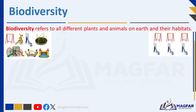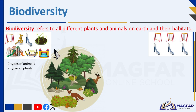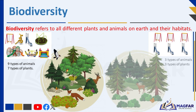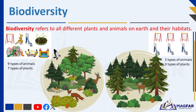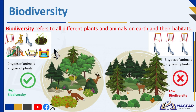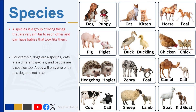This is like a habitat with low biodiversity. This forest on the left has many types of trees, bird species, and both big and small animals. If you pause and count, you can see there are nine types of animals and seven types of plants. The forest on the right has only three types of animals and three types of plants. So biodiversity describes how many types of organisms are living in a single location — not how many individual organisms, but how many types. The forest on the left has high biodiversity, while the forest on the right has low biodiversity.